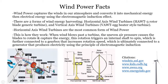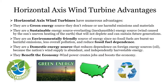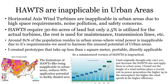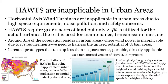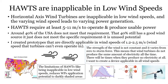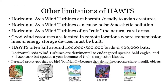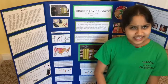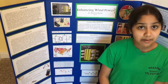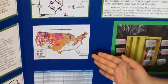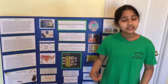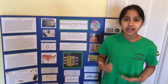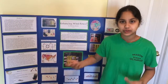Wind power is unable to reach its full potential due to several limitations. For example, horizontal-axis wind turbines are inapplicable in urban areas due to high space requirements, safety concerns, and noise pollution, and they require high wind speeds of 5 meters per second to even operate. These limitations reduce wind power's application potential to 50% of the United States. We need to resolve these limitations to make wind power an efficient and globally applicable energy source.